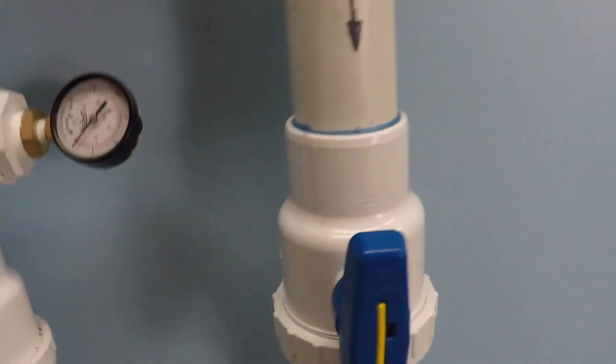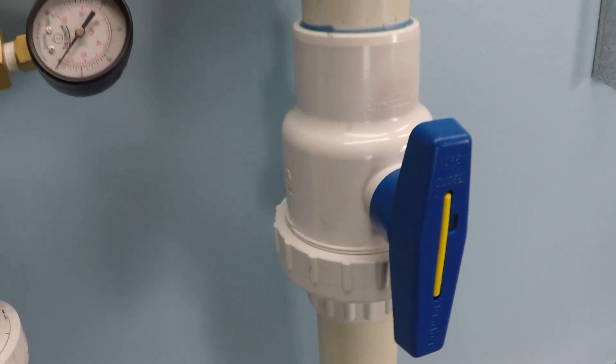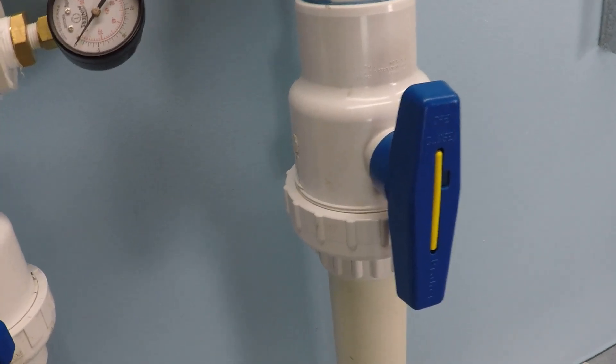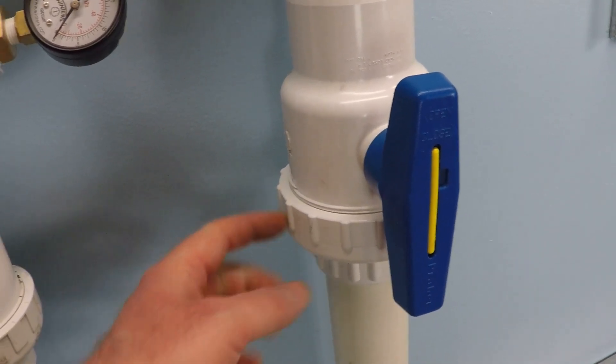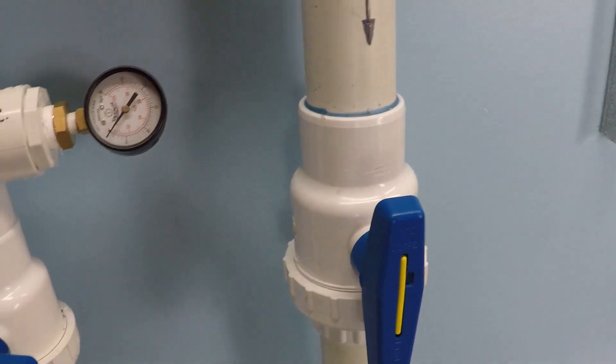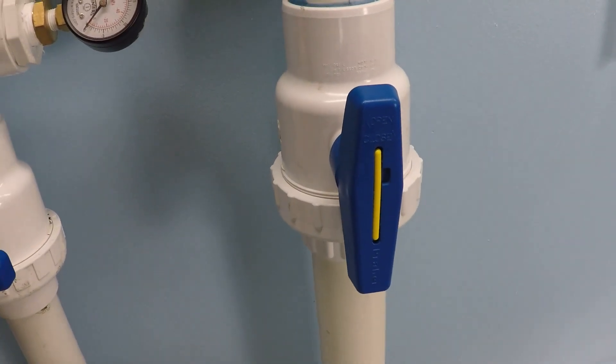There's a couple different styles of these guys here. This one you're looking at, that's a single union ball valve. What does that mean? This here, that's a union. That's a threaded connection. It spins open and I could separate the valve for service or any other thing.